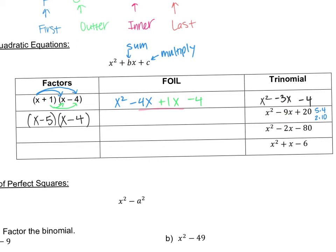Let's verify by foiling: x times x is x squared. x times negative 4 is negative 4x. Negative 5 times x is negative 5x. Negative 5 times negative 4 is positive 20. The inner terms combine: negative 4 minus 5 is negative 9x. Combined with x squared and 20, we get back our original trinomial. So to summarize: find the last number's factors and check which pair adds up to give the middle term.